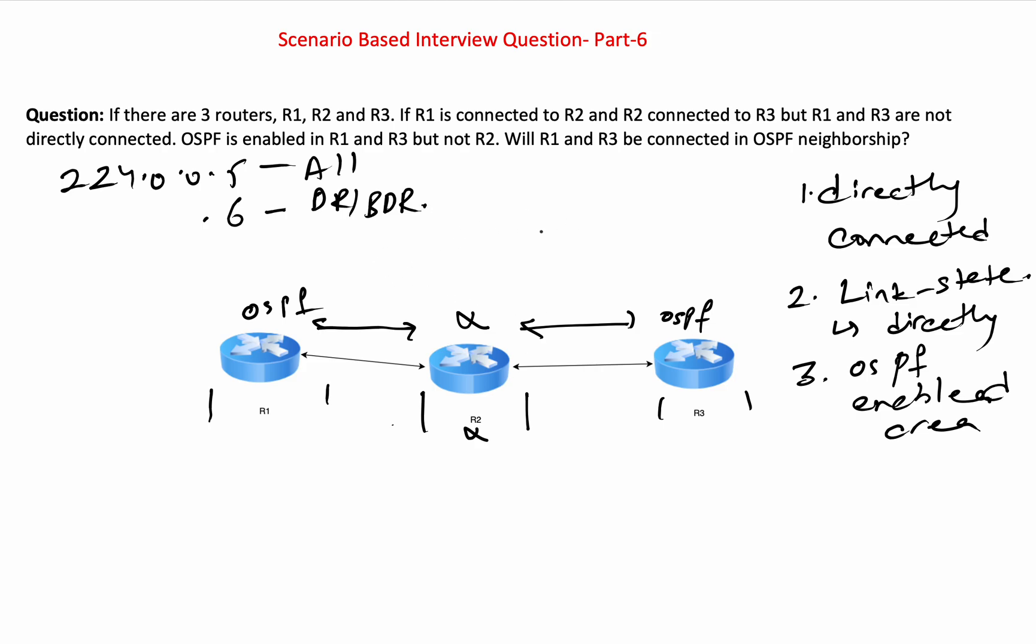So basically this router will not listen to dot 5 or dot 6 and it will drop the package directly. Because of that, there will not be any neighborship between R1 and R3. So they will remain isolated and there will not be any OSPF neighborship between R1 and R3. This is a very simple question and direct answer so that you don't get confused in interviews.